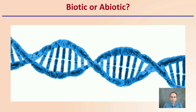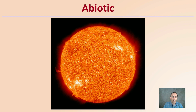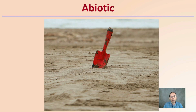A strand of DNA — deoxyribonucleic acid — would be abiotic. Looking at the sun, hopefully not staring directly at it outside — the sun would be an example of abiotic, with a lot of combustion and fusion going on. The sand, being mineral-based, is also abiotic.